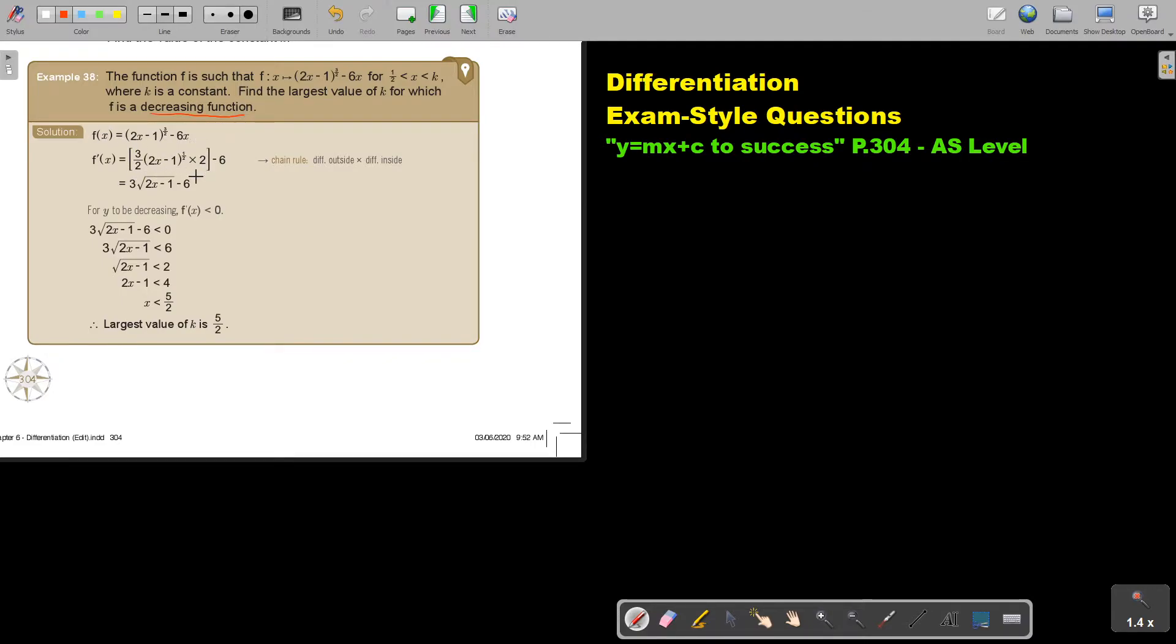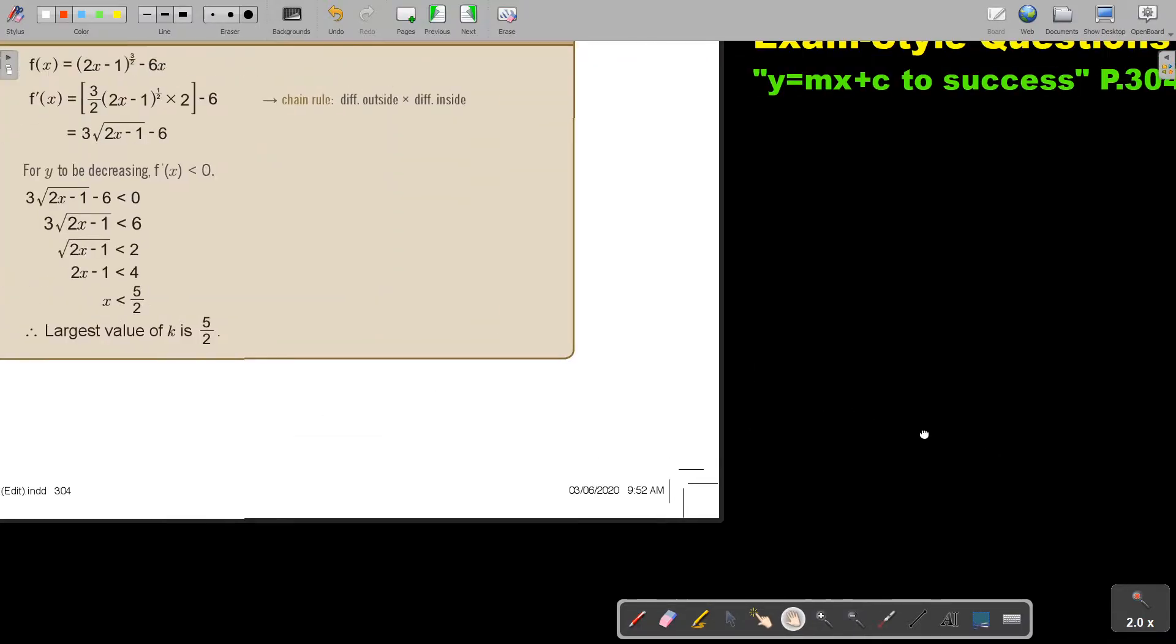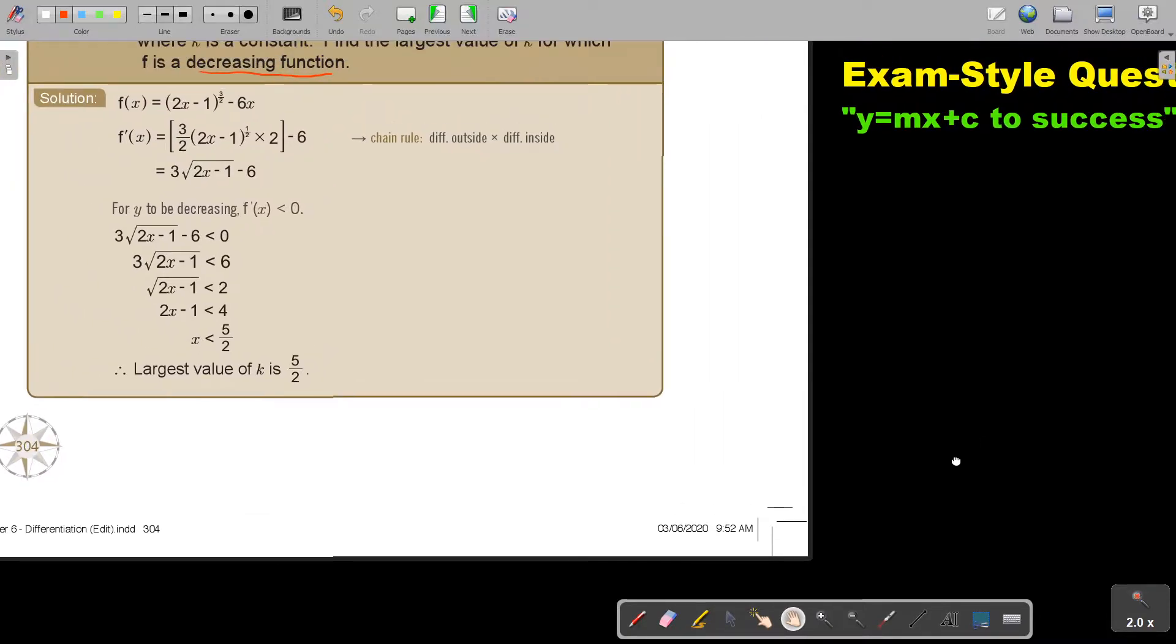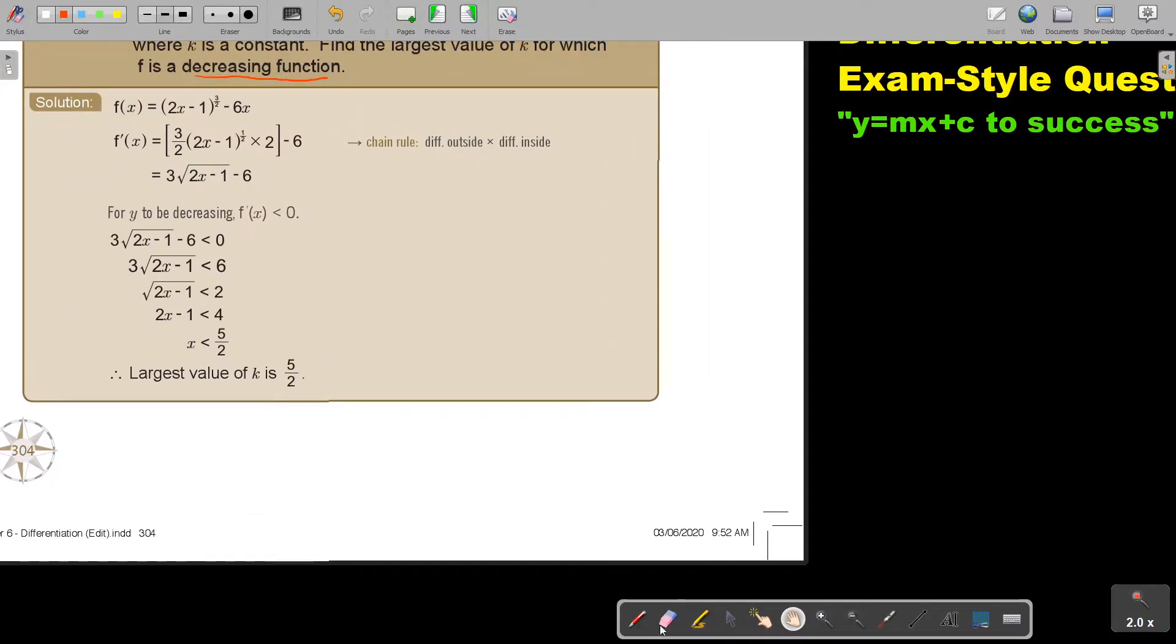First step that we're going to do, I'm going to make it a little bit bigger. So the first step that we're going to do is we are going to differentiate. So do the short way of the chain rule. First differentiate the outside, multiply the inside, and then differentiate that term. And then I get this.